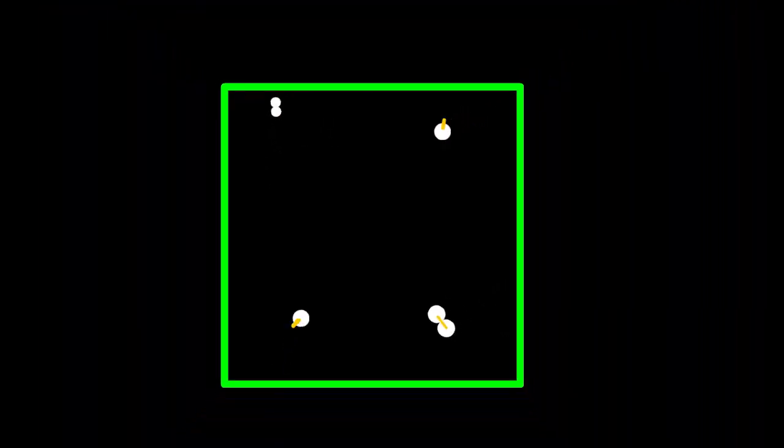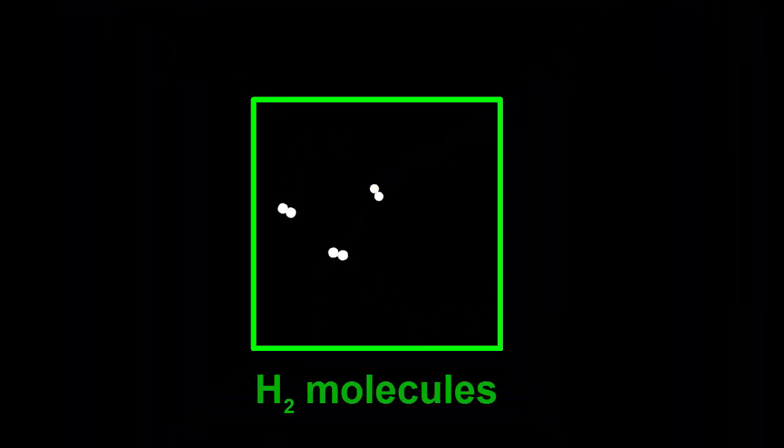When another hydrogen atom crashes into the molecule, it doesn't stick because all the bonds inside the molecule are used up. A box full of hydrogen atoms will quickly turn into a box full of H2 molecules.